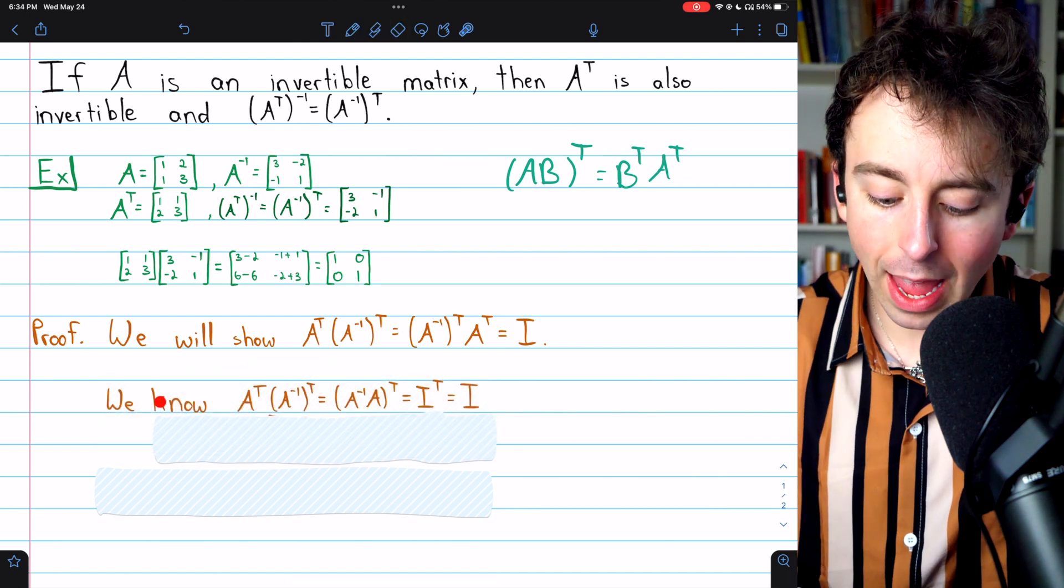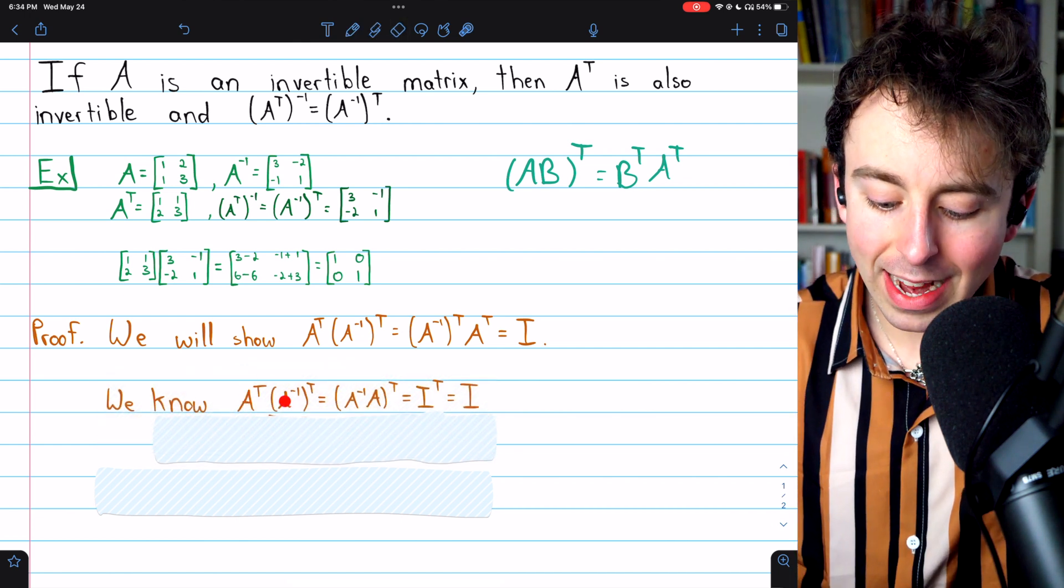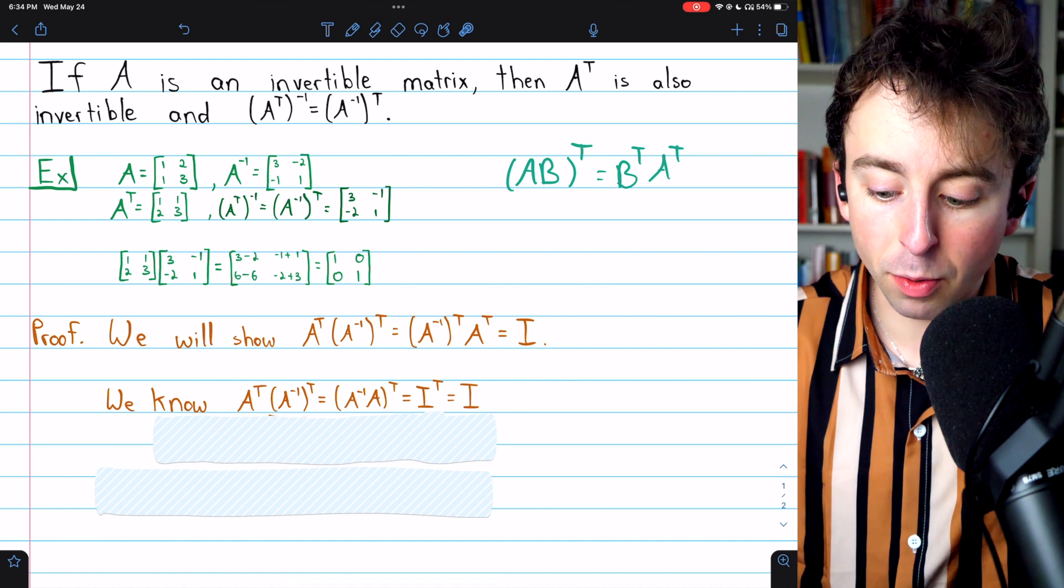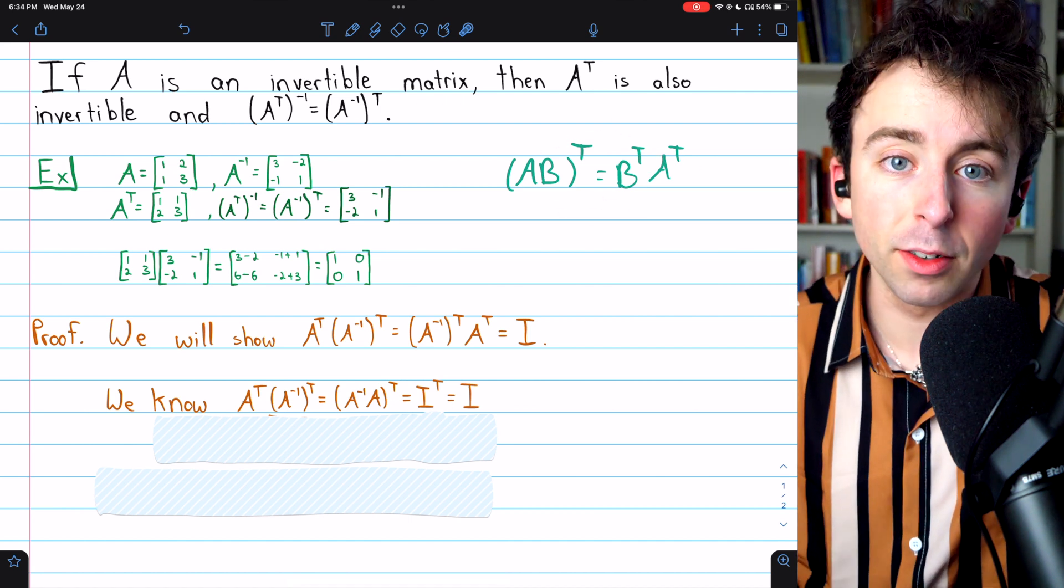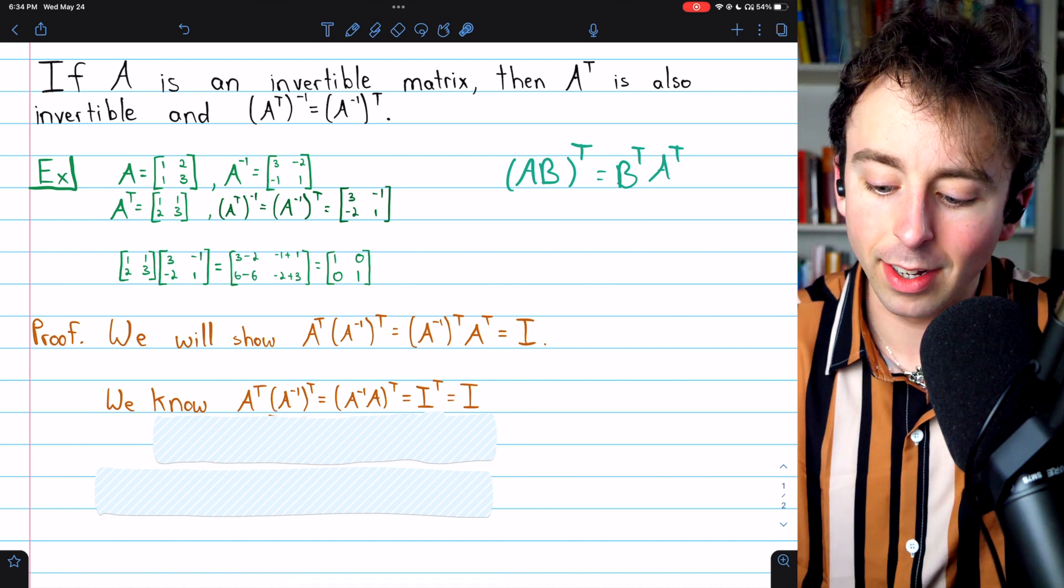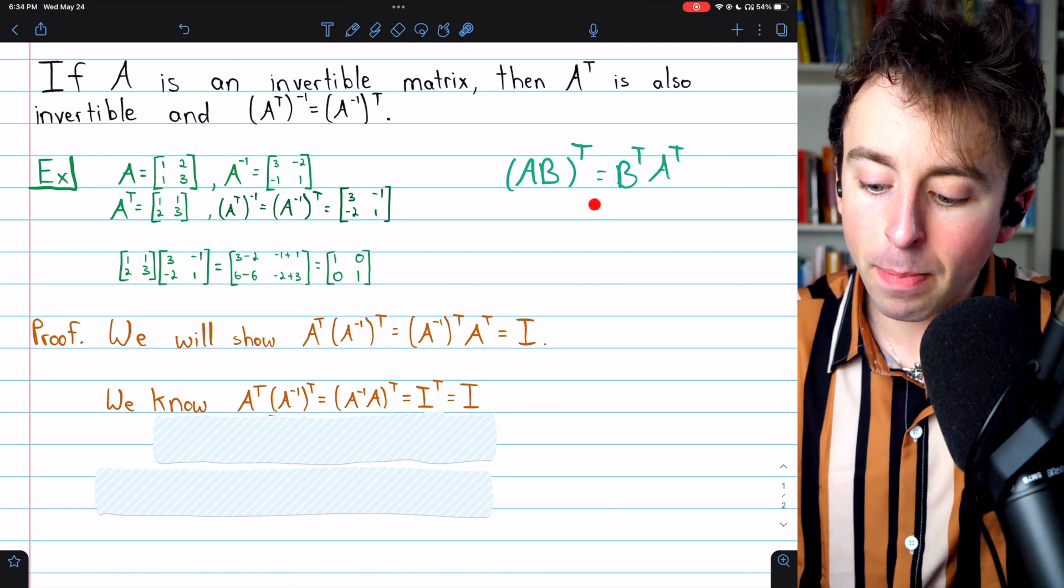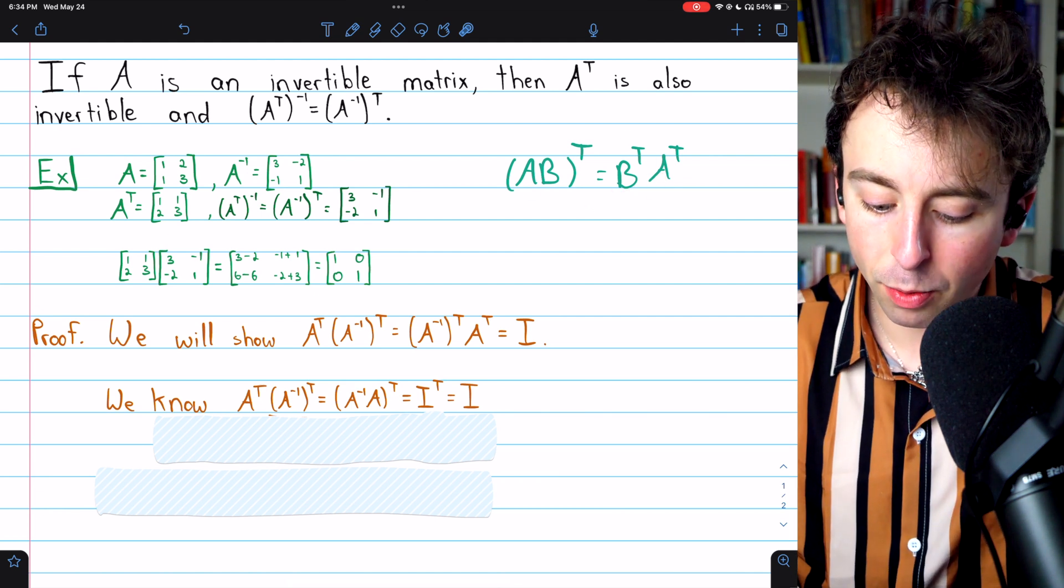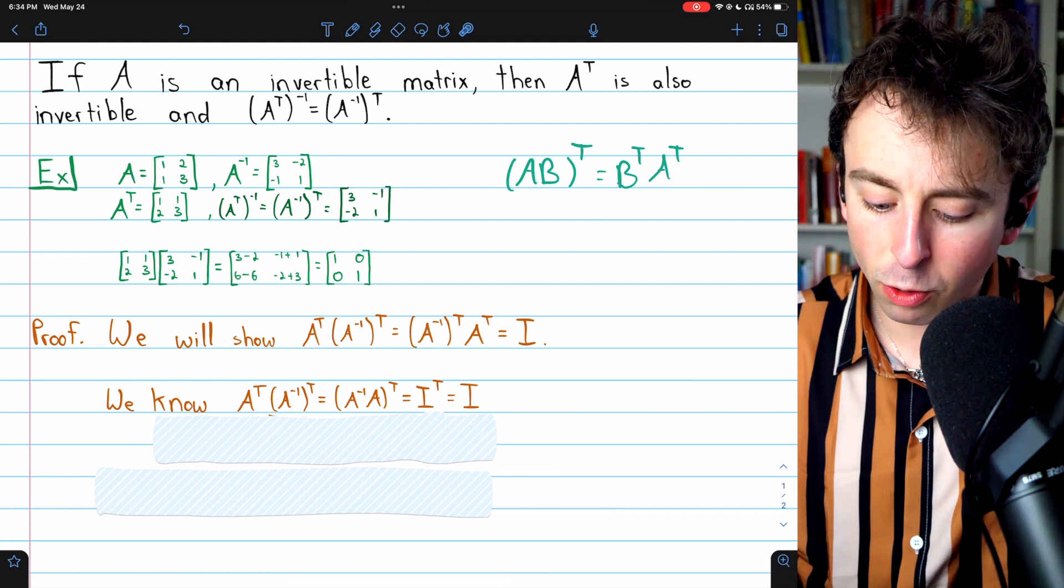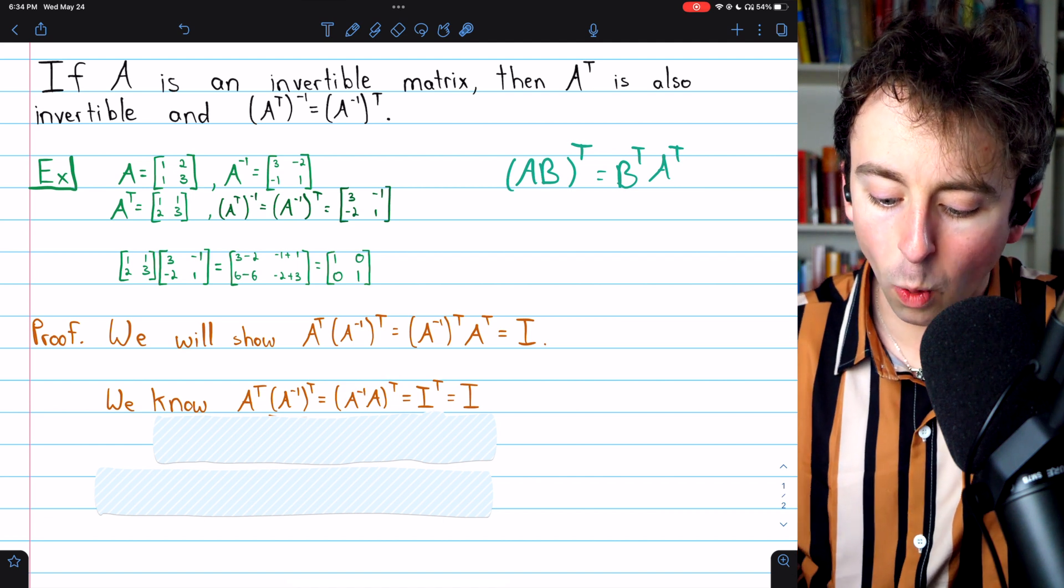All right, here we go. We know that A transpose times A inverse transpose by this property that we just went over, and link in the description to my more thorough lesson introducing this property. But by this property, we know that this product of transposes is just the transpose of the product, but with the order switched.